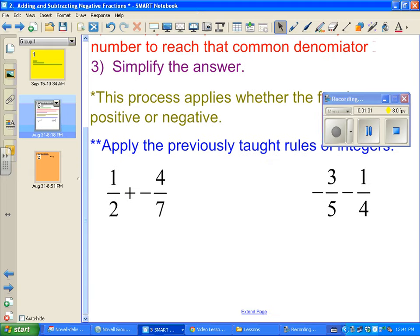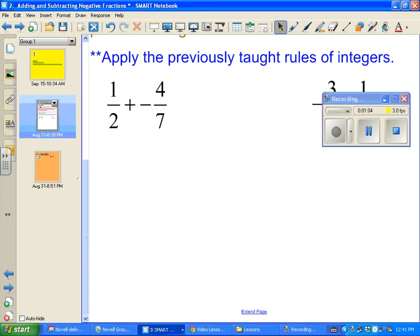We've got one-half plus negative four-sevenths. So follow our steps that are listed above. They're now out of view. We need to find a common denominator for each. We've got 14. So one-half, we did two times seven to get 14, so one times seven becomes seven. Then we did seven times two to get 14. Then negative four times two becomes negative eight.